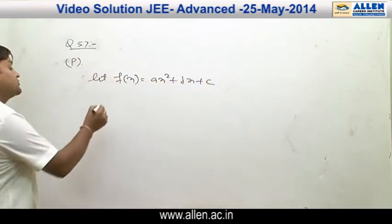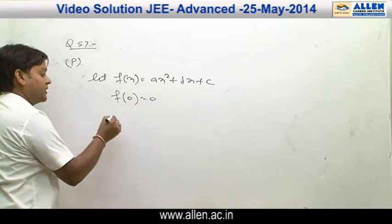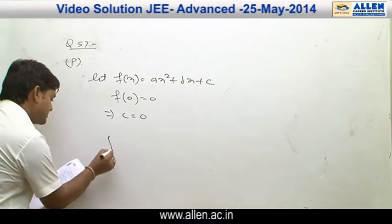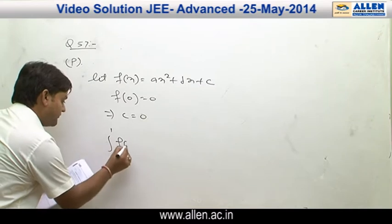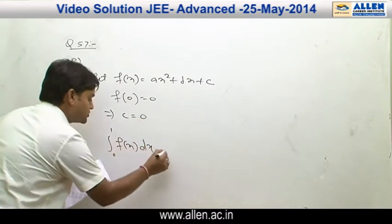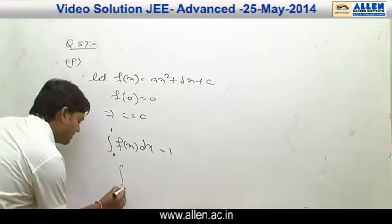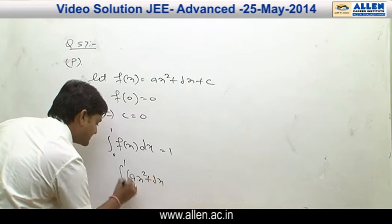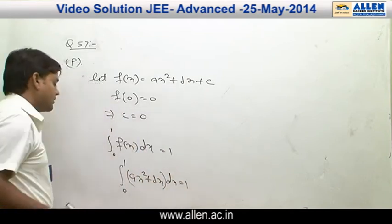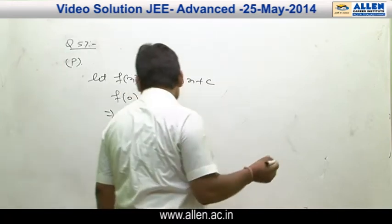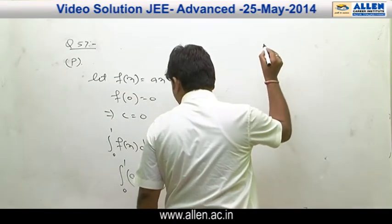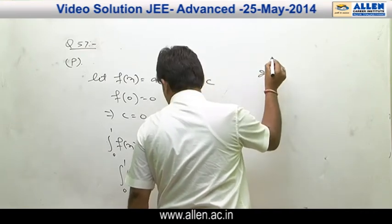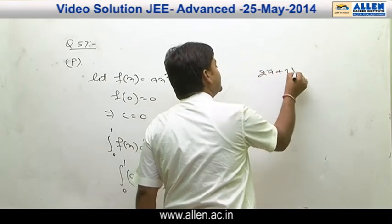In this equation, f(0) = 0, which means C = 0. The further condition given is the integral from 0 to 1 of f(x²) + Bx dx = 1. We have the integration from 0 to 1 of x² + Bx dx = 1, and after solving this integration the final answer is 2A + 3B = 6.